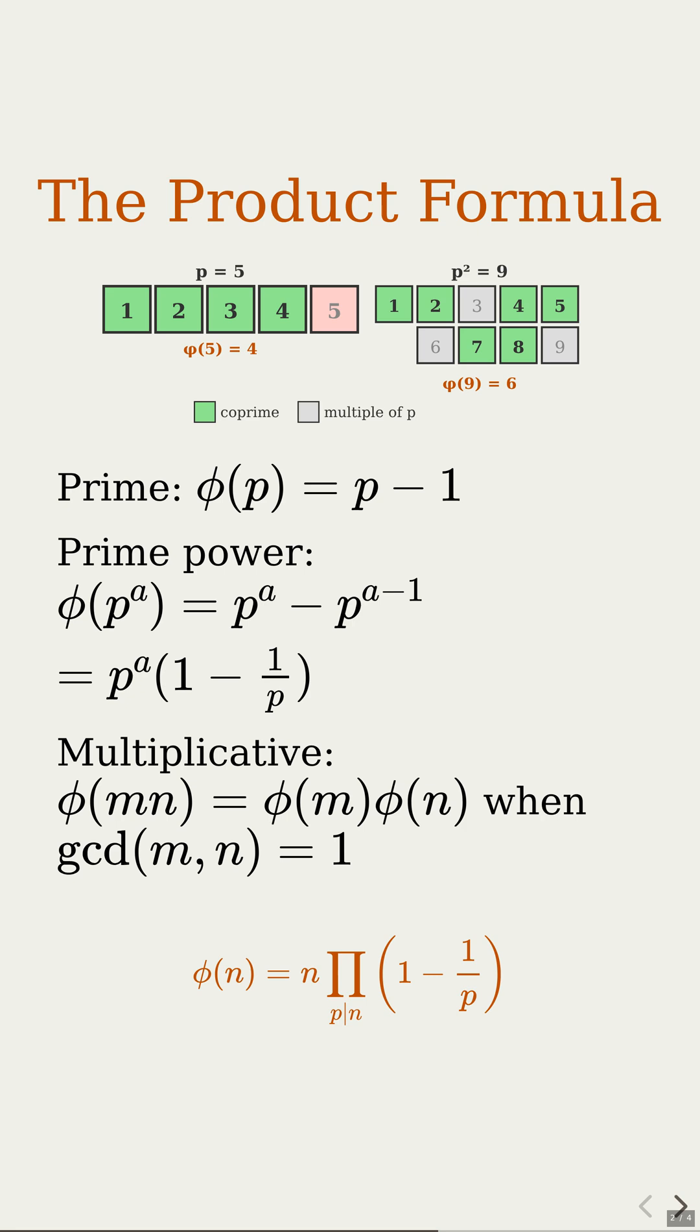Put it together. Factor n as a product of distinct prime powers. Phi of n is the product of the phi of each prime power, which pulls out an overall factor of n and 1 minus 1 over each prime. So you start with n numbers. Then for every prime that divides n, you keep only a 1 minus 1 over p fraction of what's left.